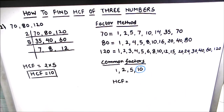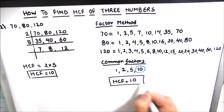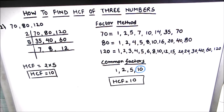The highest common factor — the biggest number among all the common factors — is 10. So the HCF of 70, 80, and 120 is 10. This is how we find the HCF of three numbers using the factor method or the prime factorization method. I hope this video is helpful. If you like the video, please hit the like button and subscribe to my channel for more math videos. Thanks for watching.